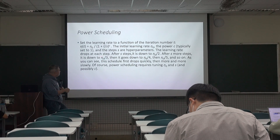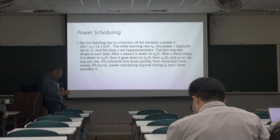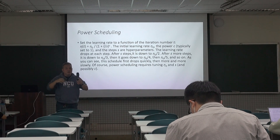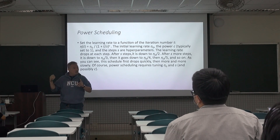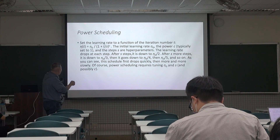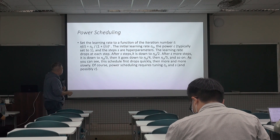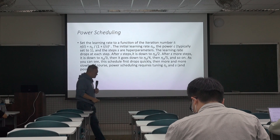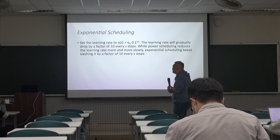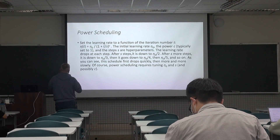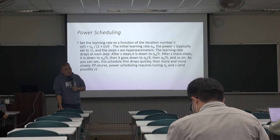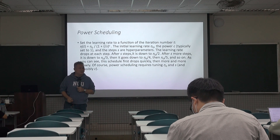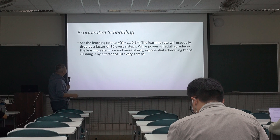Every s iterations the denominator increases by one, so the learning rate actually reduces slower and slower over time. In reality, the learning rate reduction in power scheduling is quite slow — it's not as powerful as the name might suggest. We need to find good values for η₀ and s; c is normally not adjusted.